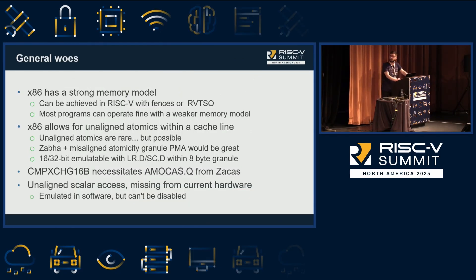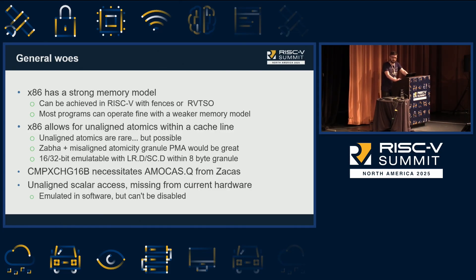I'd like to talk about some general issues we face in the translation process. x86 has a strong memory model. If in RISC-V we have ZTSO, that is not a problem. But if we don't — which is the default — we need to use fences. It turns out that a lot of programs and games can operate fine without inserting fences on every single memory load and store, so by default we don't insert fences and programs work, but the option is there if needed.